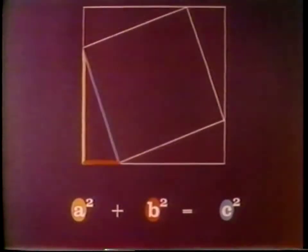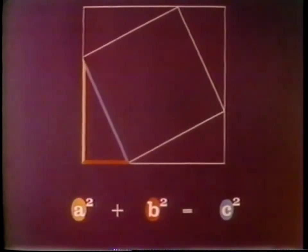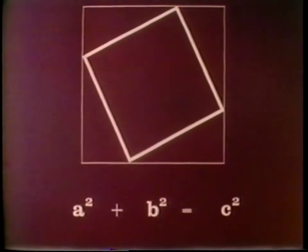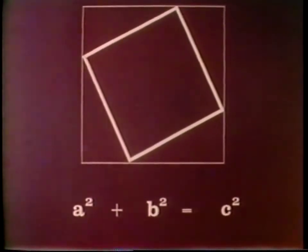We assume that the inside figure is a square. But in a rigorous proof, this assumption should also be proved.